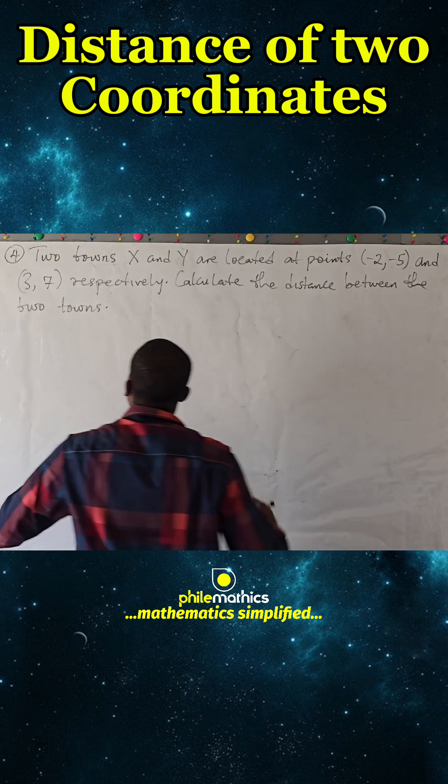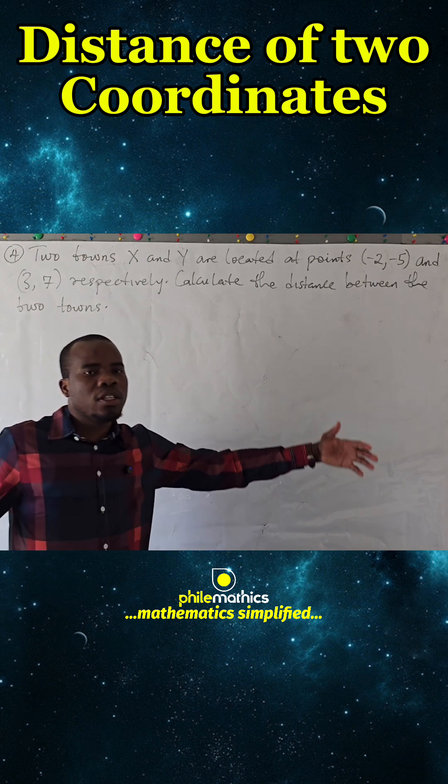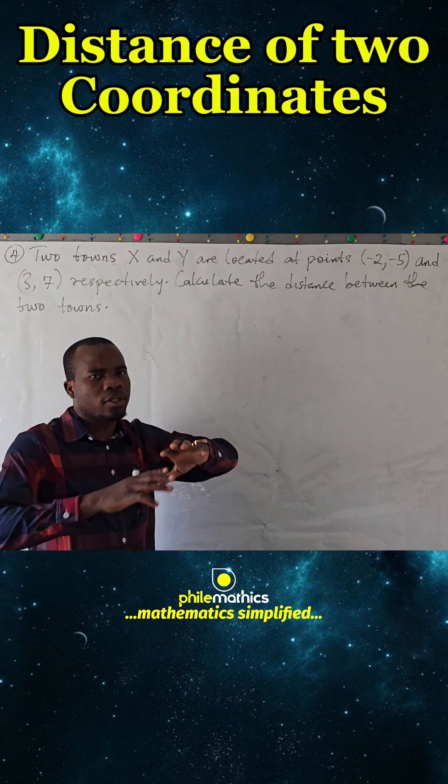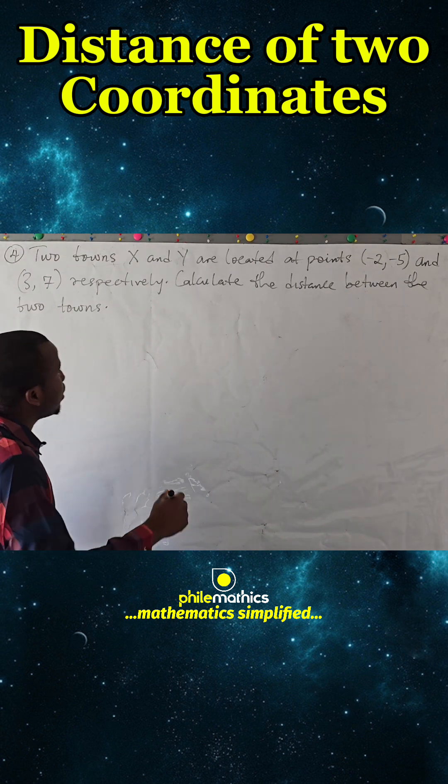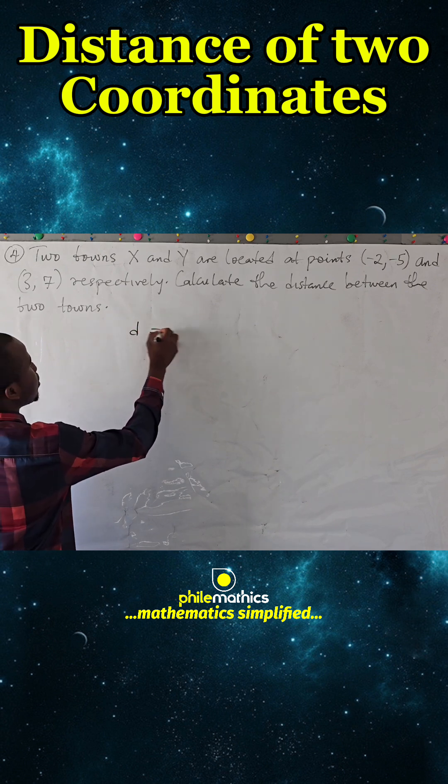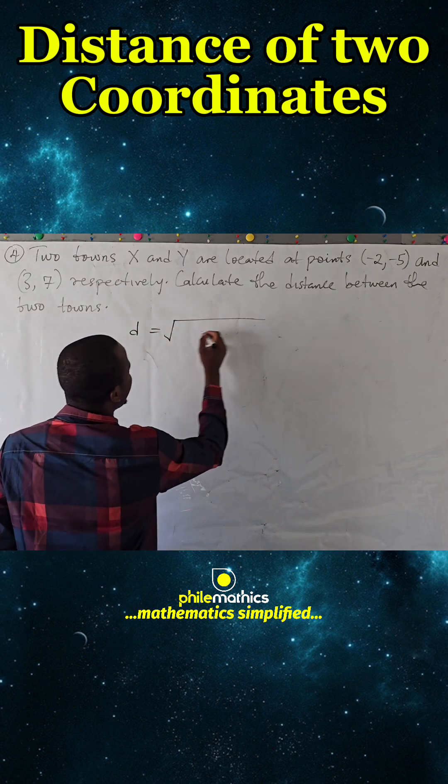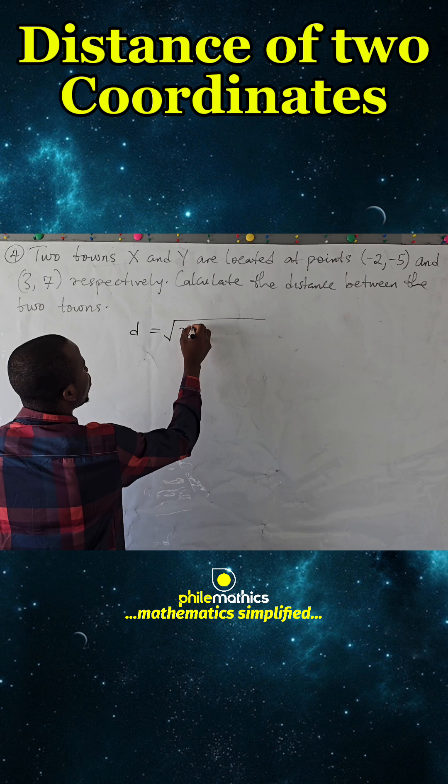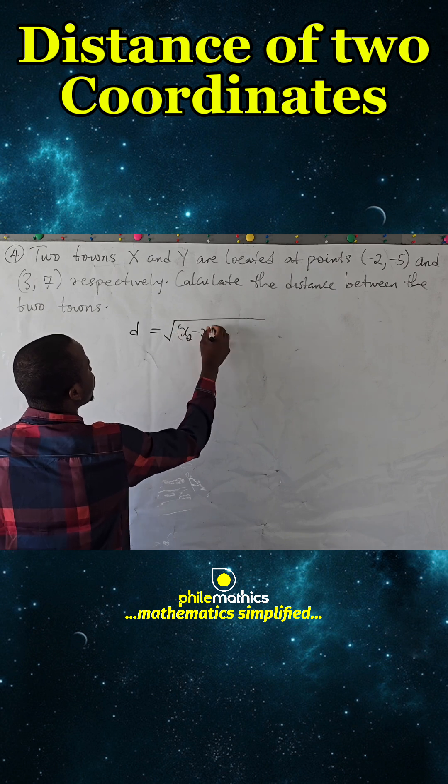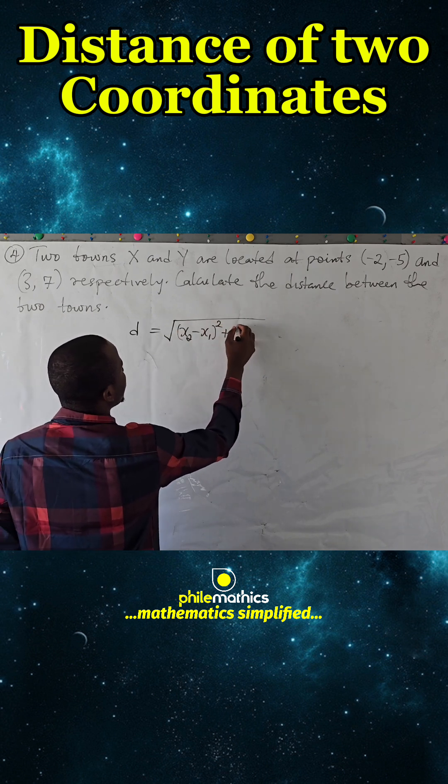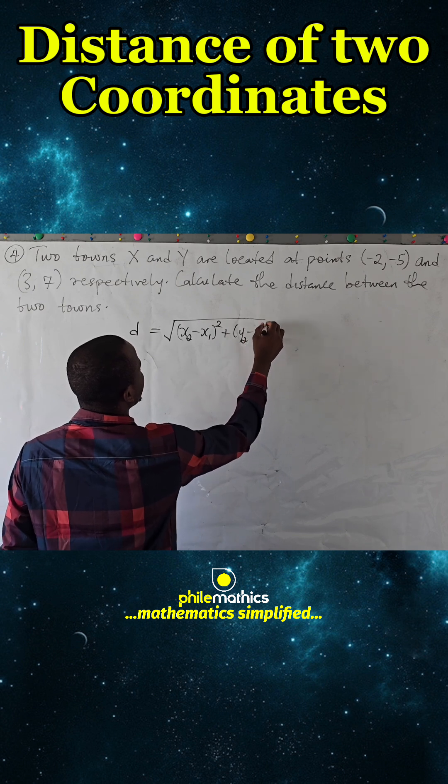There's a formula for calculating the distance between two points on the coordinate axis, and that formula says: distance is simply the square root of (x2 - x1) all squared plus (y2 - y1) all squared.